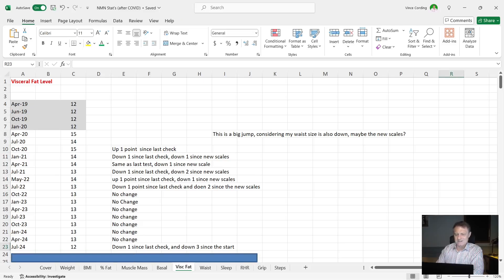This time it's gone down, thankfully to 12. So that's down one since the last check and it's down 3 since the start. So well again, although I put weight on, I'm happy that my body fat percentage has gone down and my visceral fat level has also gone down too, because this is an important marker of metabolic syndrome and other things like that.